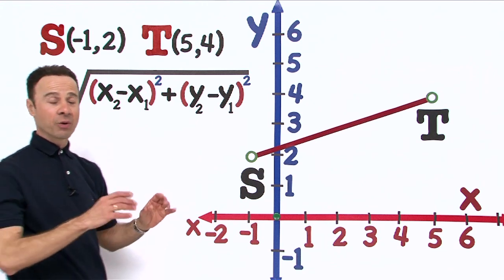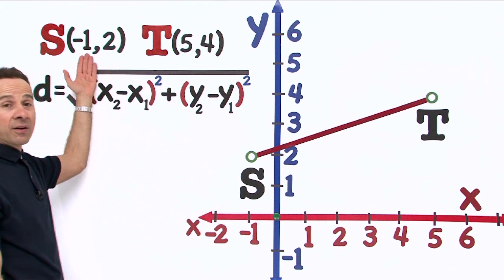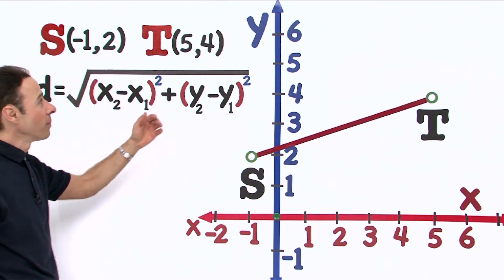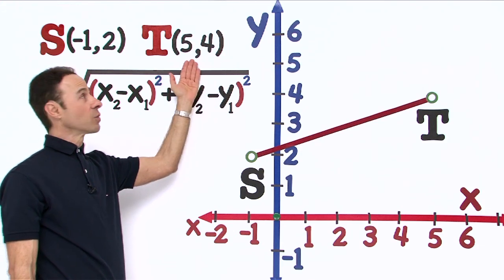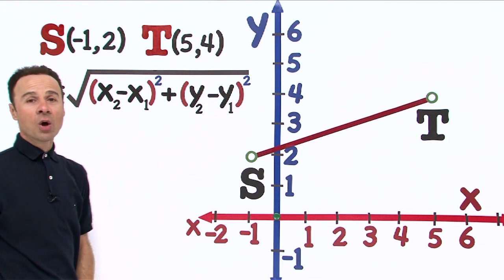We have the coordinates already written up. Coordinates for S are up here: negative 1 and 2, x and y. Coordinates for T are right over here: 5 and 4, x equals 5 and y equals 4.